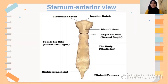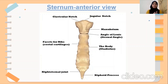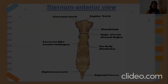The jugular notch is also known as the suprasternal notch. It is located at the level of T2. For your information, in radiography, it is used as a...